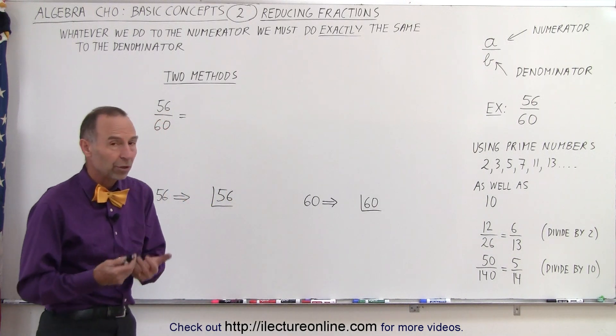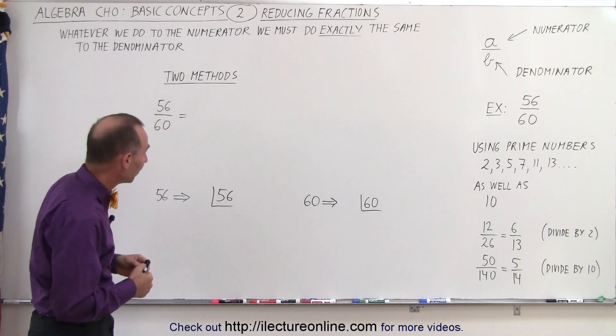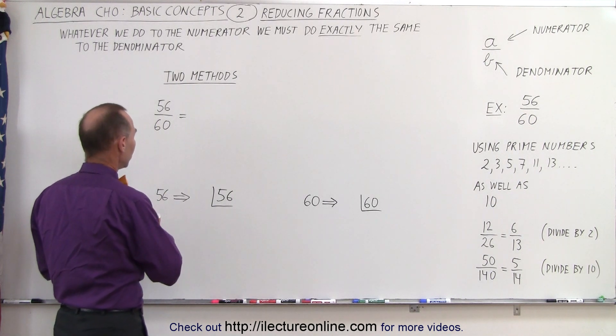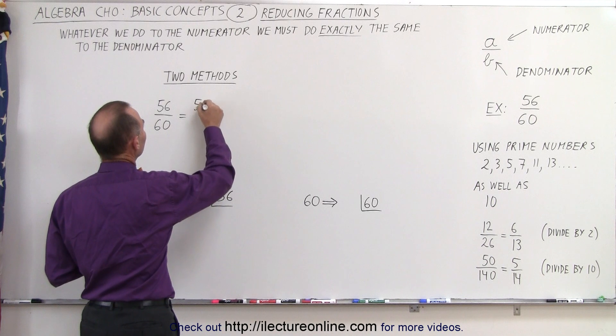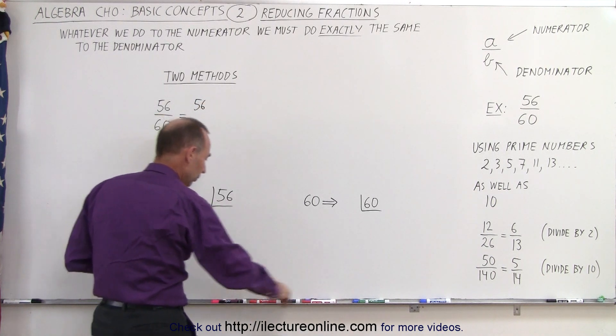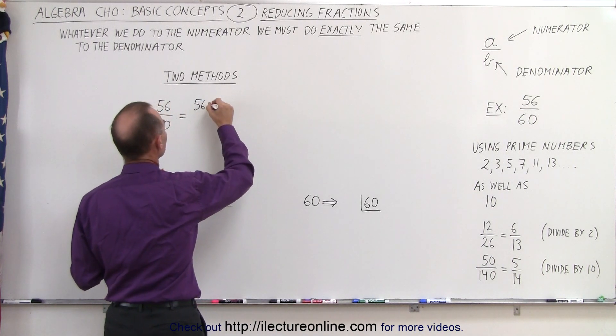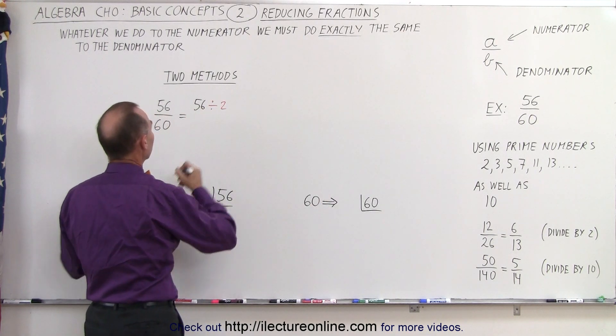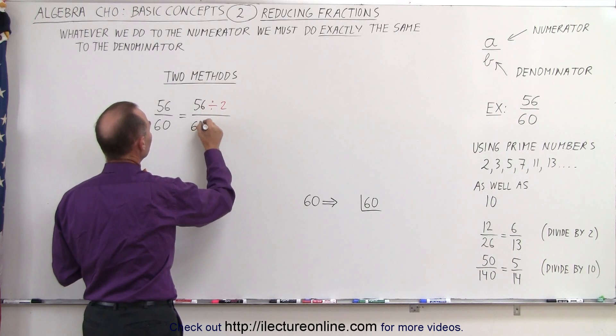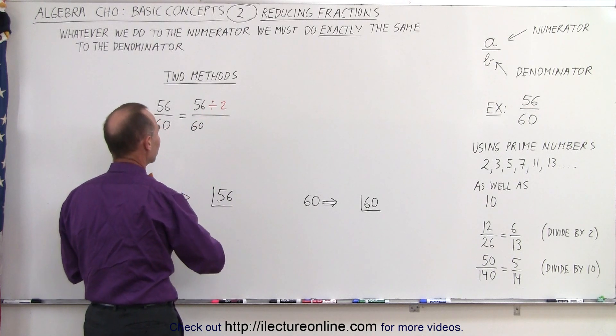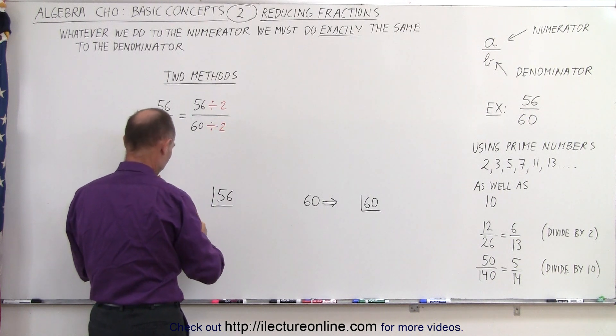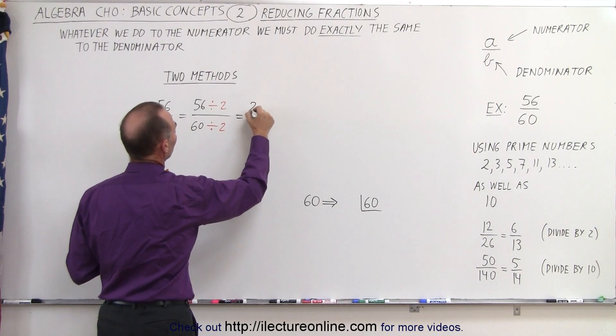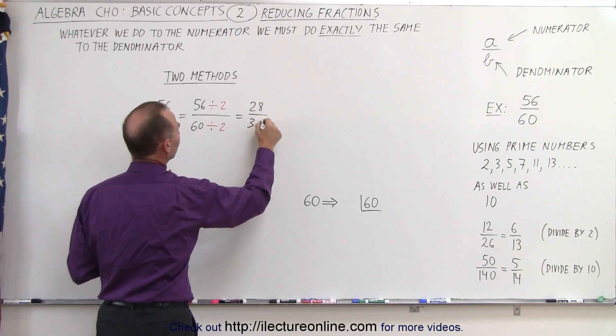But let's take a look at some of the methods we can use when the fractions aren't quite as simple. For example, 56 divided by 60. What do we do here? Well, we can say that we have 56, and then what we're going to do is divide this by 2, the first prime number. And we do exactly the same to the denominator, 60, and we're going to divide it by 2 as well. When we do that, the numerator now becomes 56 divided by 2 is 28, and 60 divided by 2 is 30.